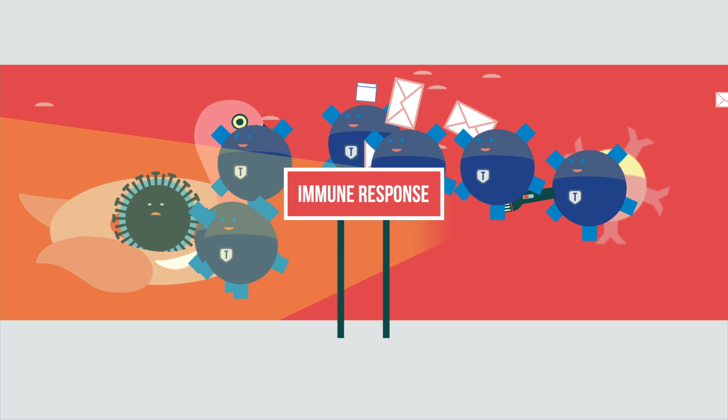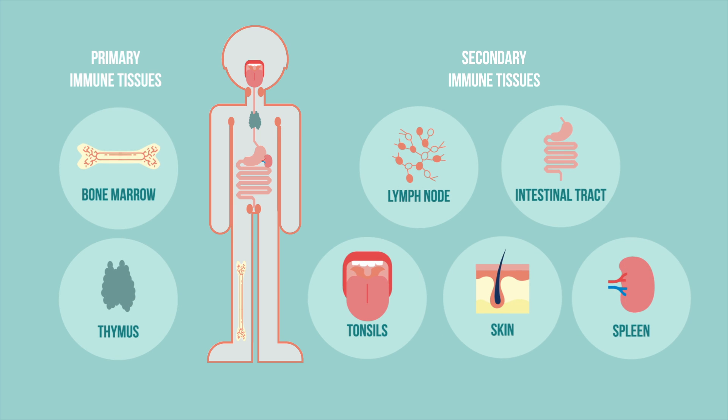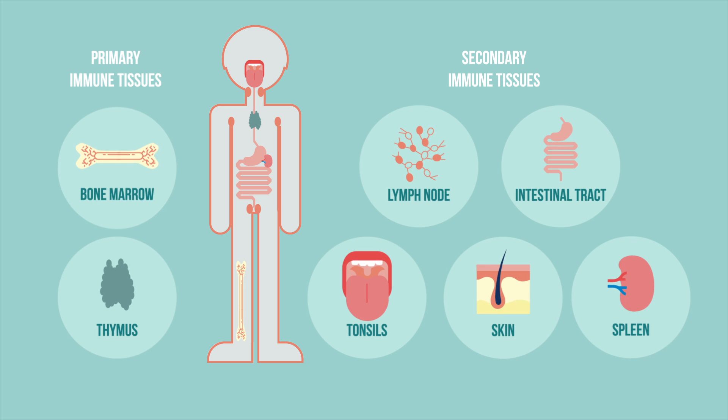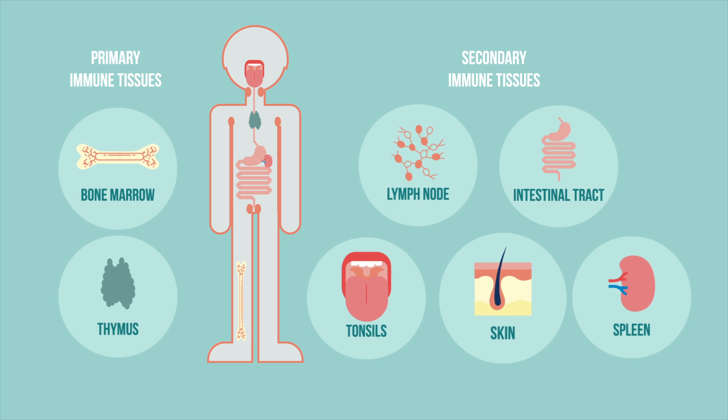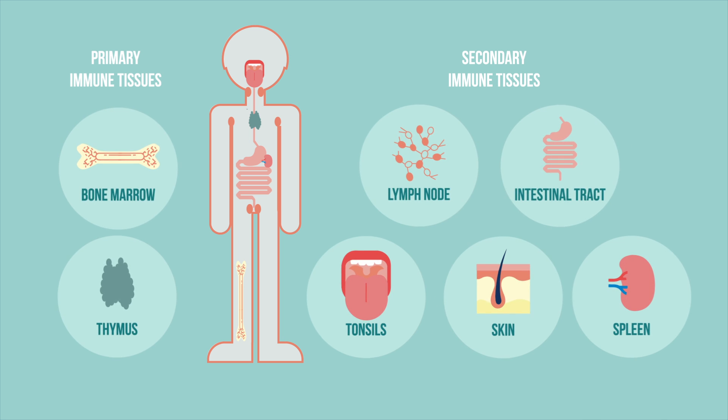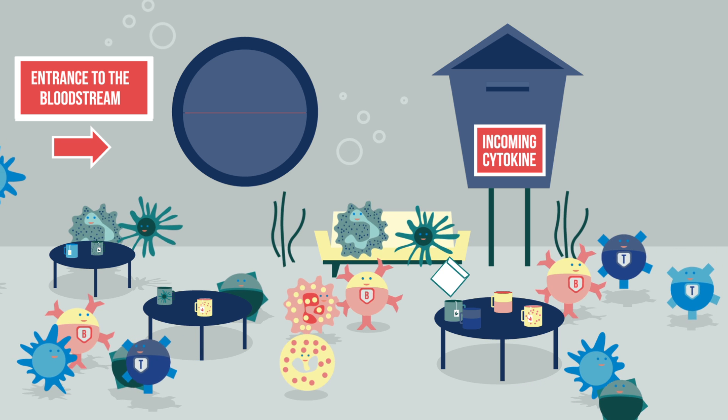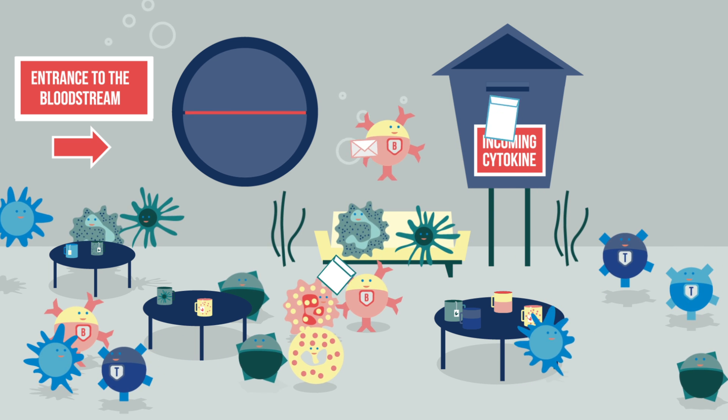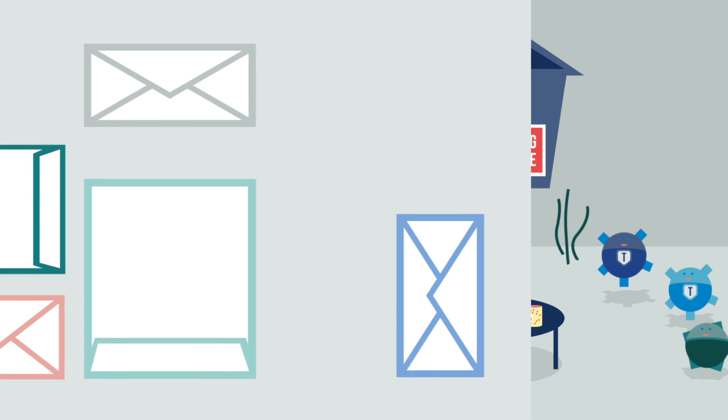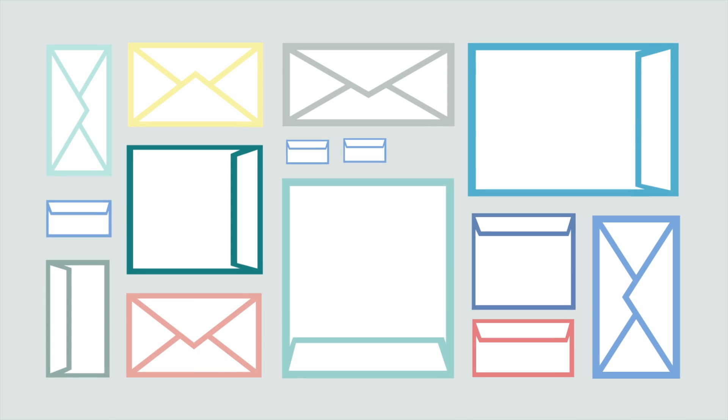There are high numbers of lymphocytes in certain parts of the body, such as bone marrow and the thymus, as well as in lymph nodes, the skin, the spleen, the intestinal tract, and the tonsils. This is where they meet and exchange information, with messages sent in the form of molecules called cytokines. These molecules differ from each other, and only those immune cells can receive them that have the right receptors.